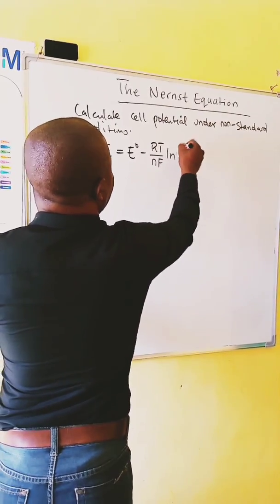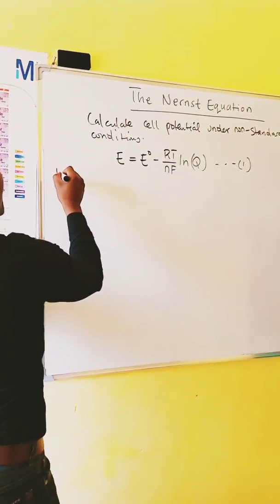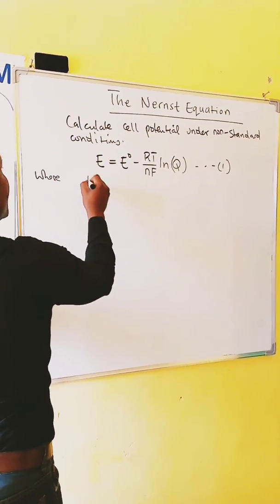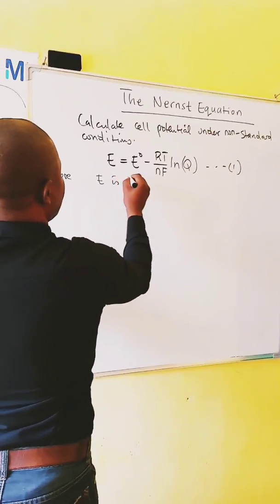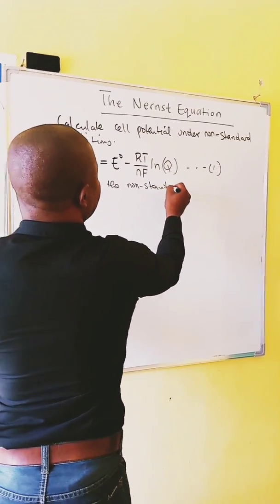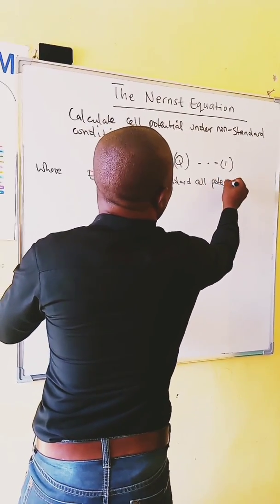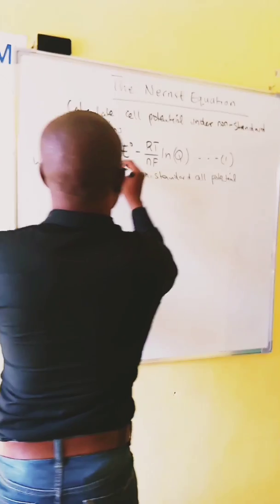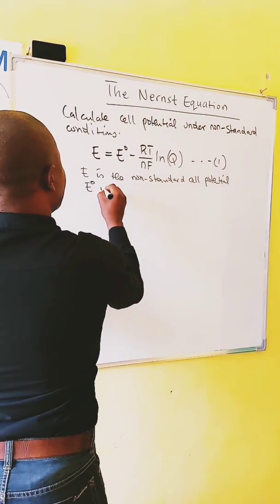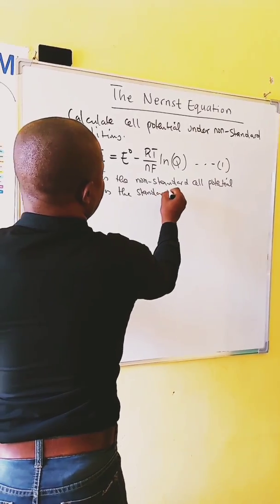Natural logarithm of Q. Where E is the non-standard cell potential, E0 is the standard cell potential.